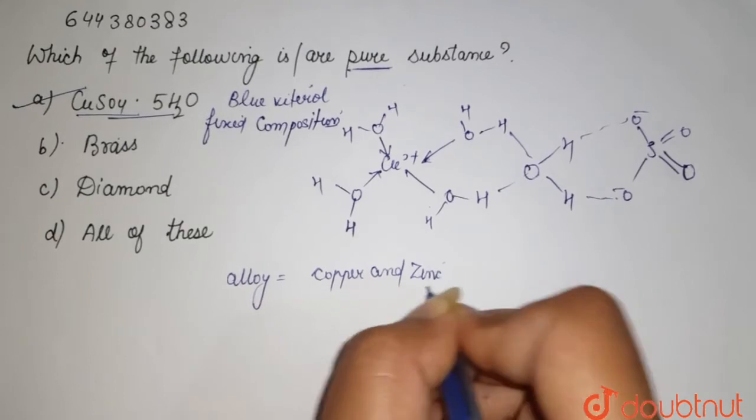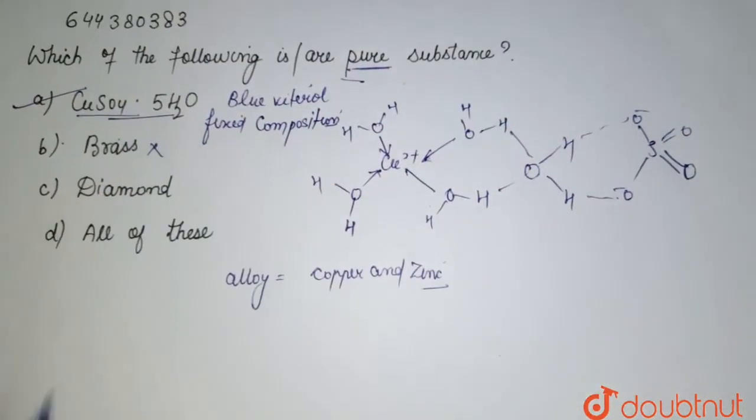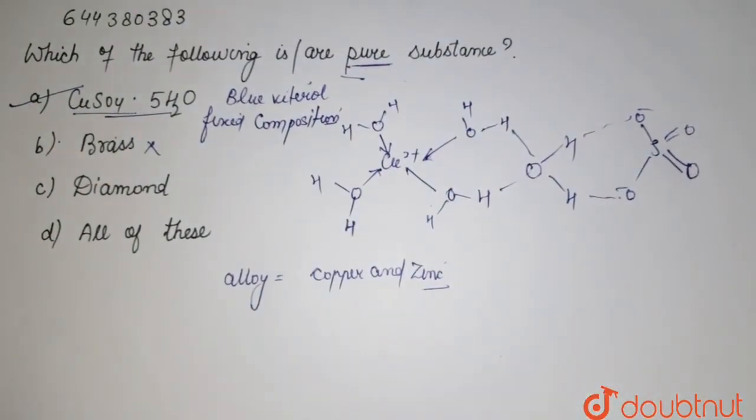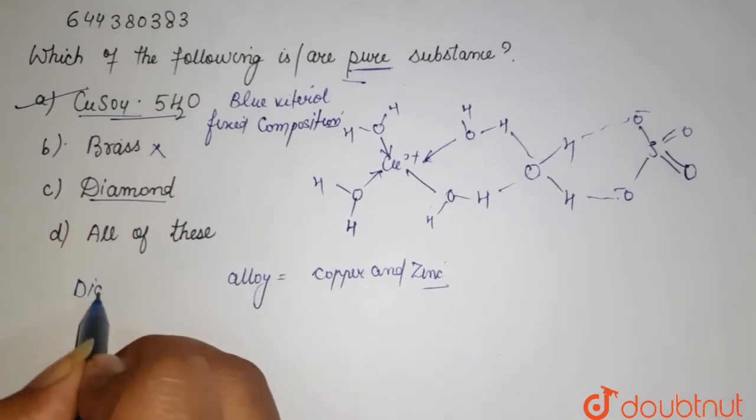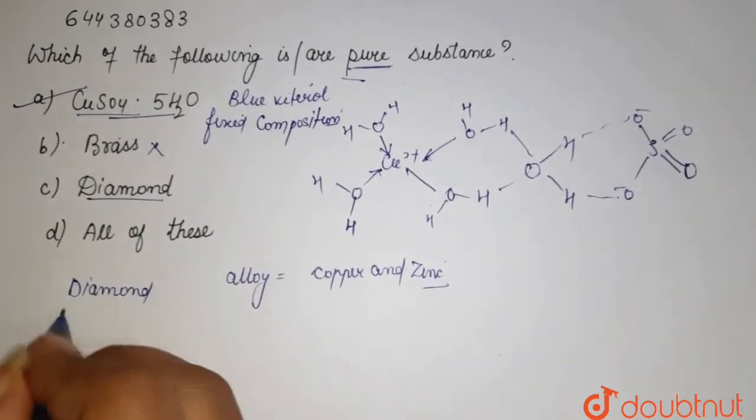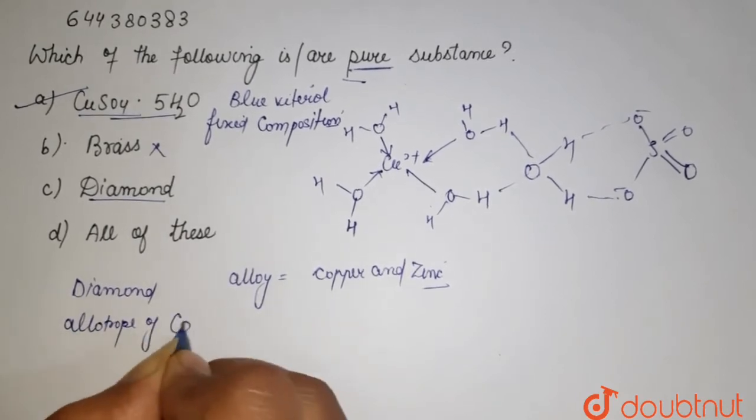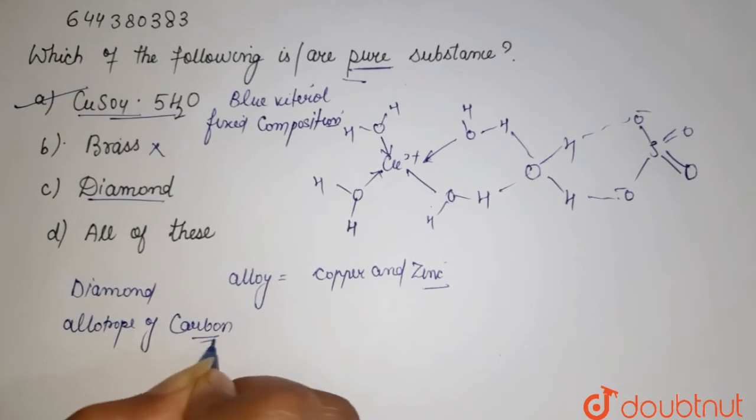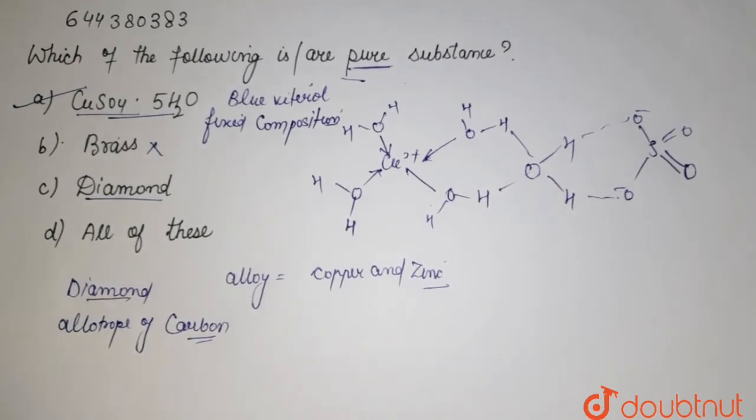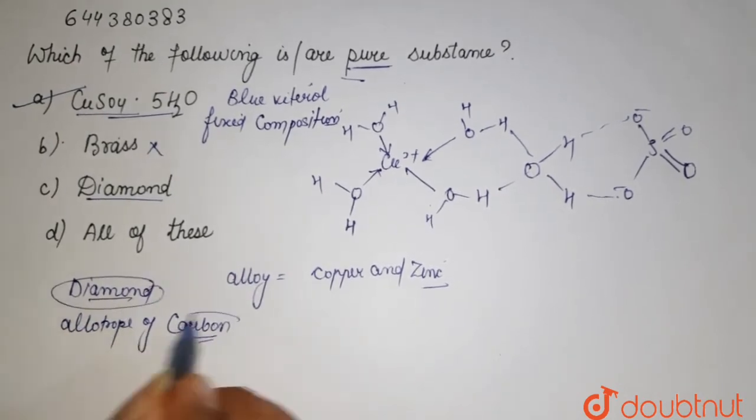Then we are having diamond. It is allotrope of carbon. It is formed by carbon. The whole diamond is made up of carbon only, so it is also a pure compound.